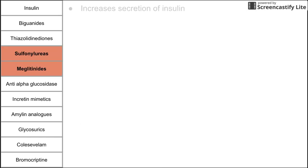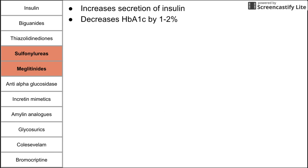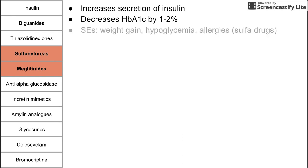Next are the insulin secretagogues, which directly increase the secretion of insulin. Both subclasses tend to decrease HbA1c by about 1 to 2%, making them quite effective. Side effects include weight gain and risk of hypoglycemia — which makes sense, since forcing the body to release its insulin stores can result in too much insulin being released. People with sulfa allergies should avoid the sulfonylureas. These drugs are administered orally.